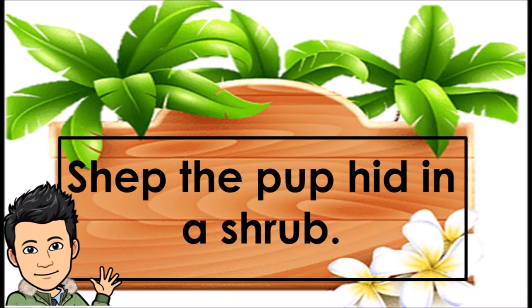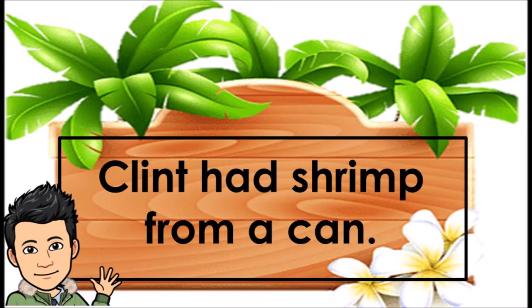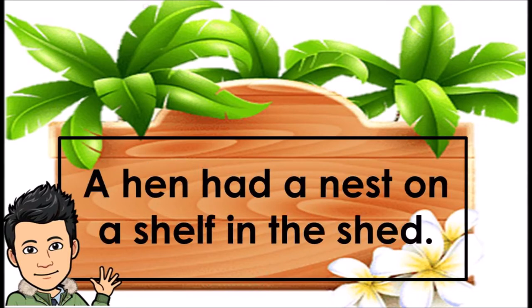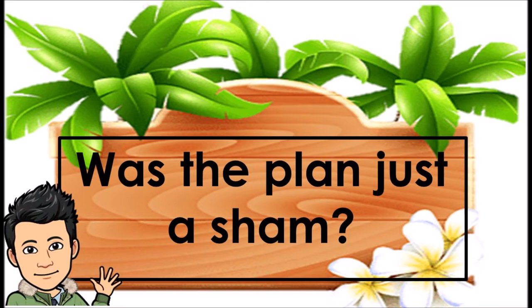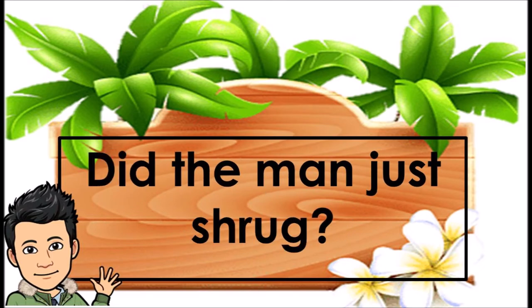Shep the pup hid in a shrub. Clint had shrimp from a can. A hen had a nest on a shelf in the shed. A cab shot past the van. Was the plan just a sham? Did the man just shrug?